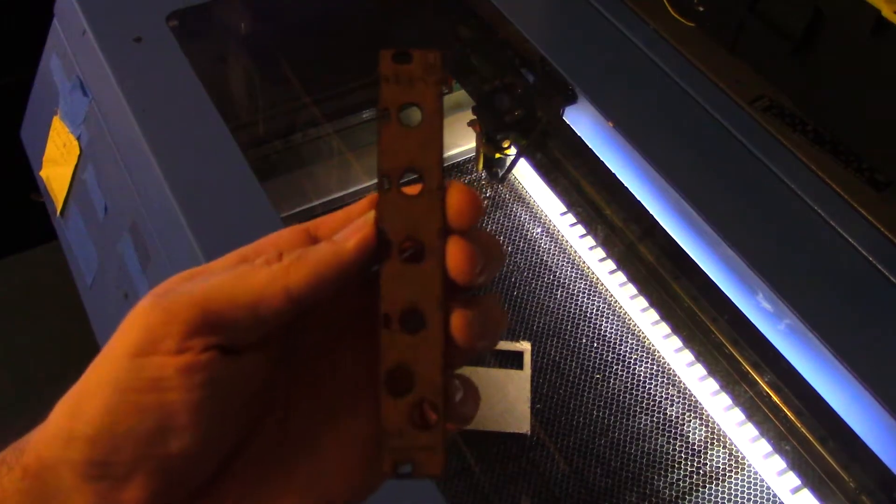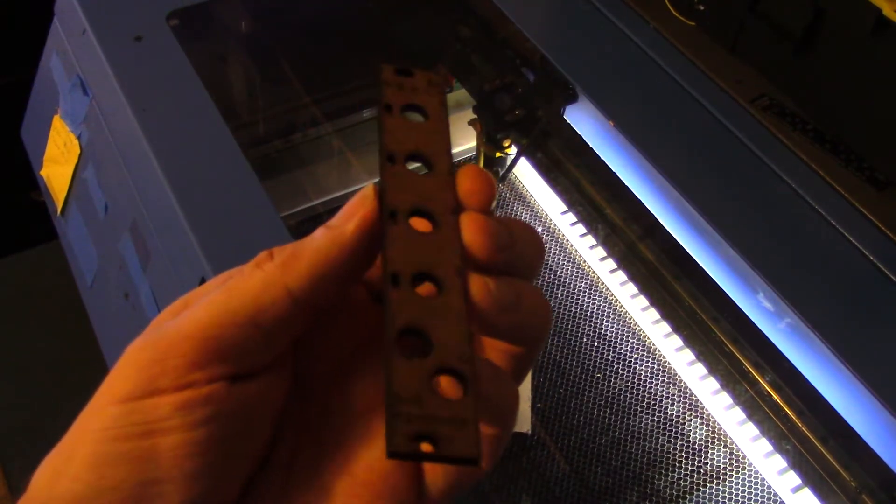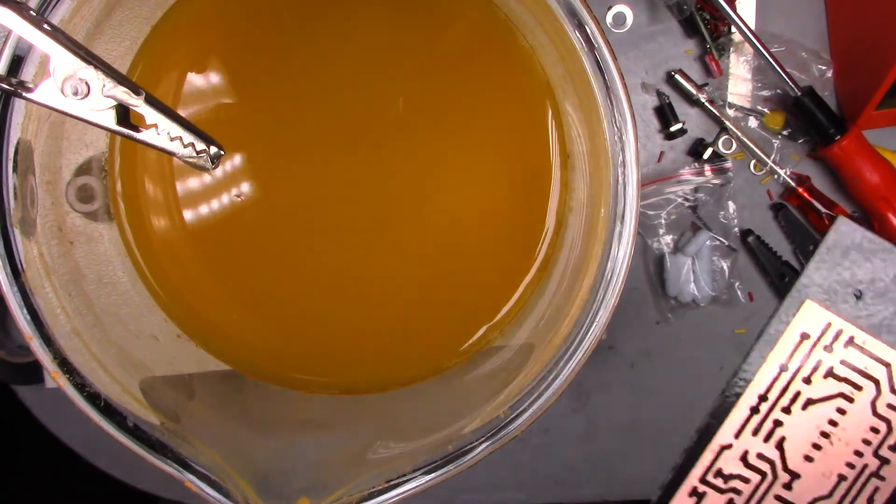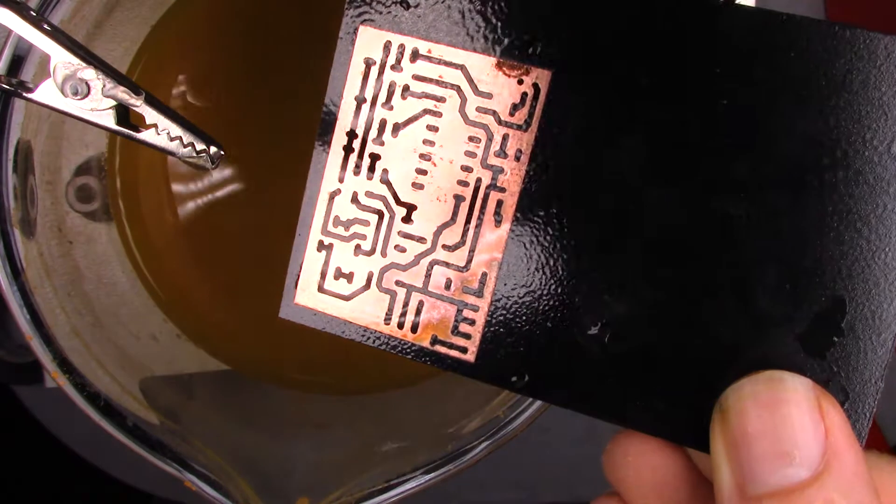And there we have it, a finished faceplate. Now to etch the PCB with ferric chloride. I don't know why my ferric chloride got cloudy, but it still works fine.